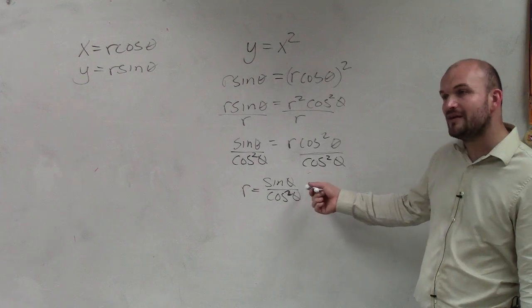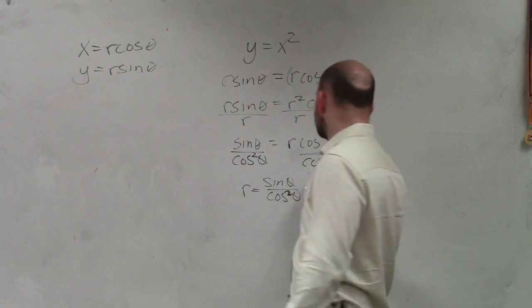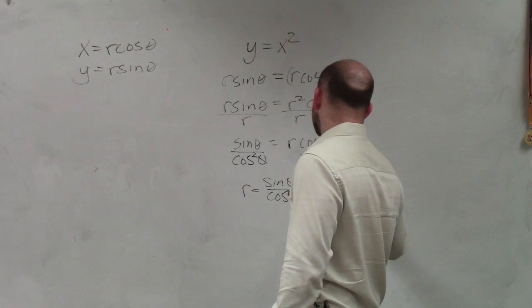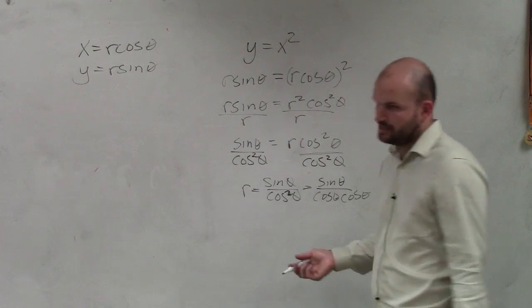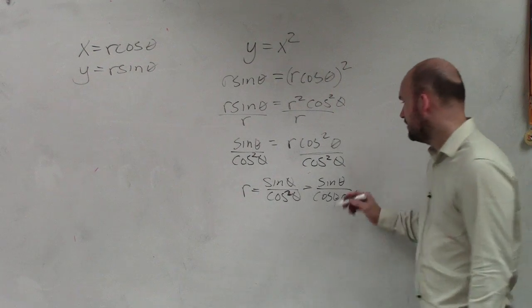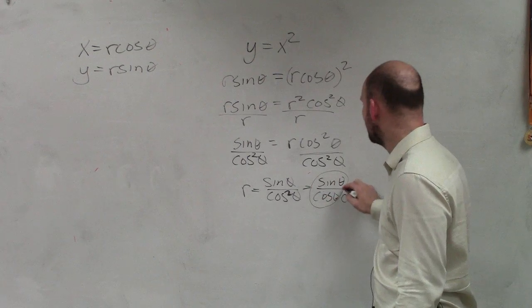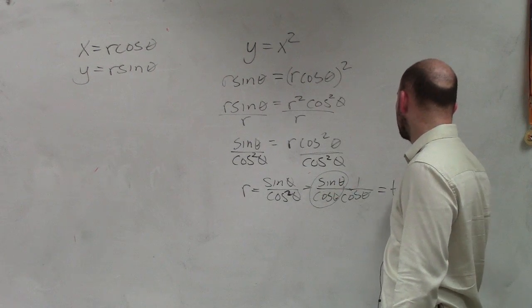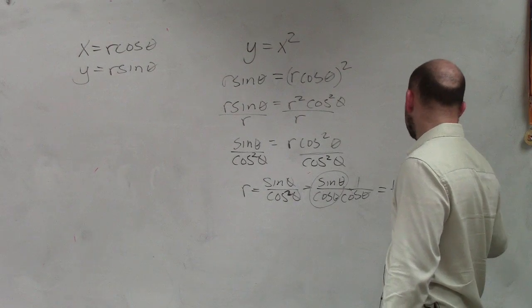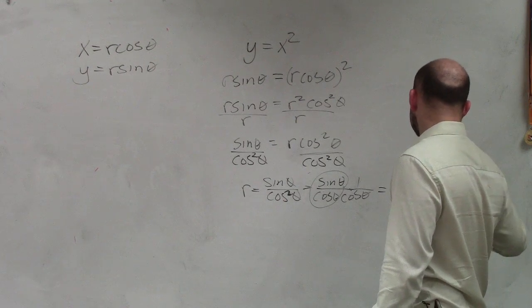So we can simplify this a little bit further. What I'm going to do is I'm going to break this up into sine of theta over cosine of theta times cosine of theta. Right? Cosine squared is cosine times cosine. Therefore, we can group this together, and we can make sure we represent that as 1. So therefore, my final answer is tangent of theta times secant of theta.